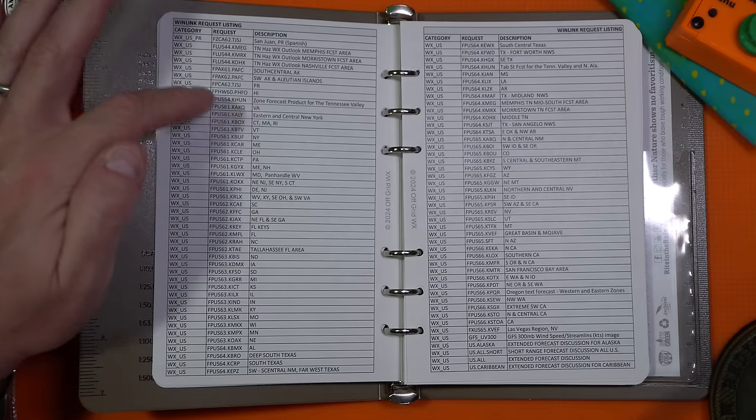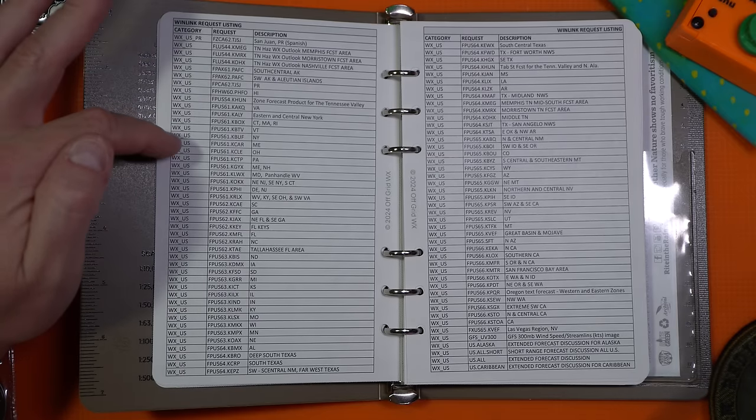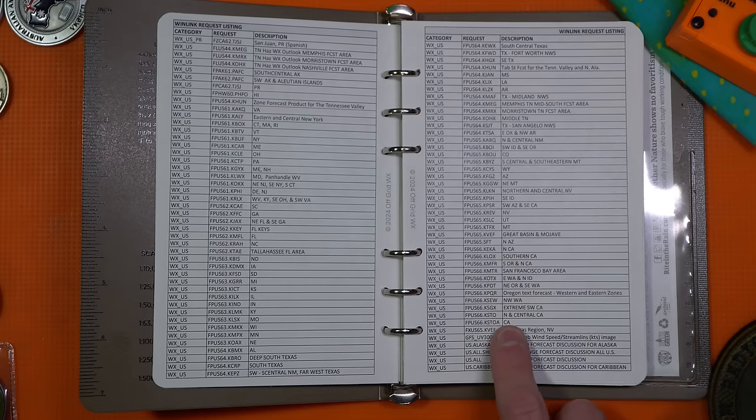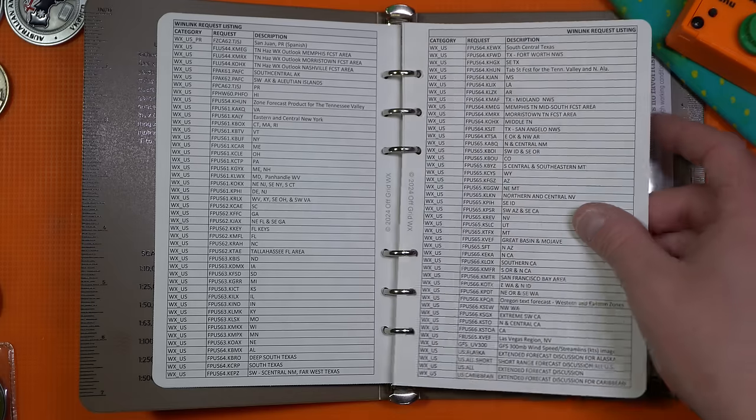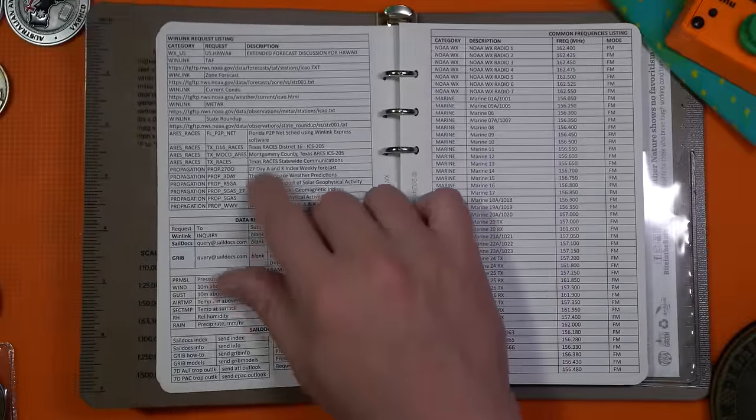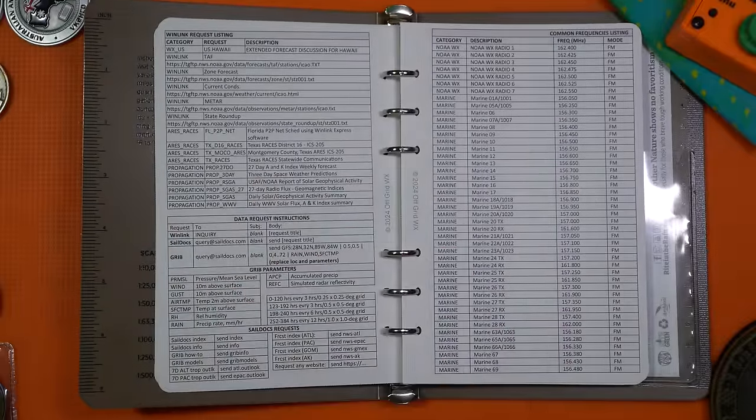So if I wanted to get California, I could go down this list and probably find it. This will give you weather in the US. So where's California? Northern California. There's probably a Southern California. There's another one for California as well for listing on weather situations.